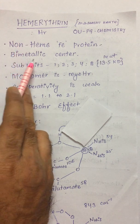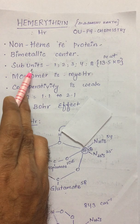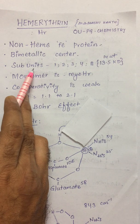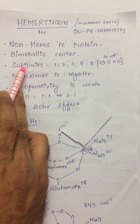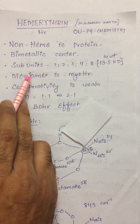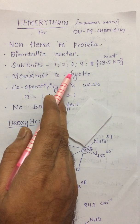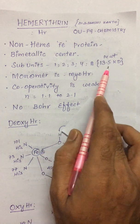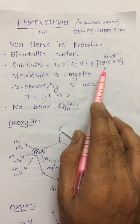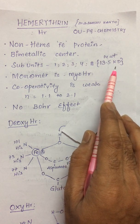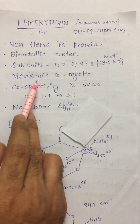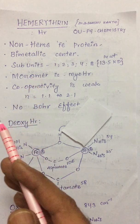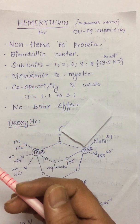Hemerythrin has a bimetallic center — each subunit has two metal atoms at the active site, unlike hemoglobin where each subunit has only one metal atom (monometallic center). The number of subunits can range from monomer, dimer, trimer, tetramer, to even an octamer. The molecular weight of each subunit is about 13,500 Daltons (13.5 kDa). The single unit is called myohemerythrin.